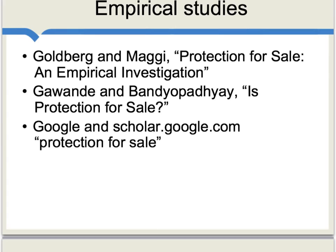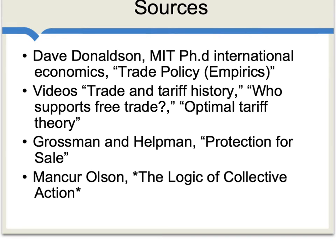Overall, some early papers provided quite definite support for the Protection for Sale model, and you'll find those papers referenced here — you can find them online. Nonetheless, more recent results are mixed, and you can track those down using Google with 'protection for sale' as keywords. I would also recommend lecture notes by Dave Donaldson on trade policy empirics, available online, as well as our other videos on trade and tariff history, who supports free trade, and optimal tariff theory. Also see Grossman and Helpman, and Mancur Olson's 'The Logic of Collective Action.'